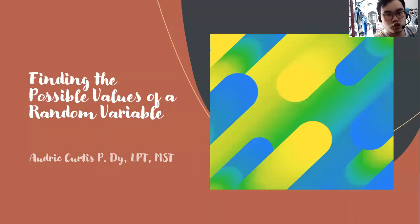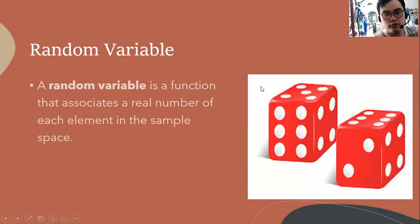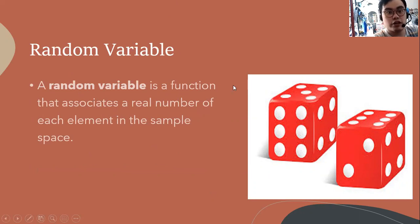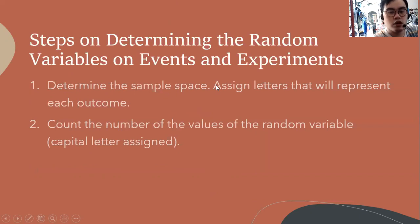Hello guys, welcome back to my YouTube channel. Our topic for today is finding the possible values of a random variable. A random variable is a function that associates a real number to each element in the sample space, meaning the values of the random variable must be a real number.